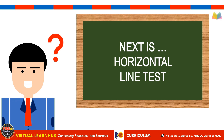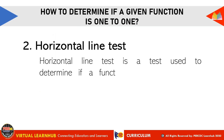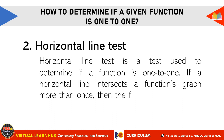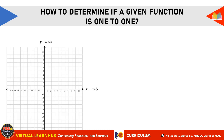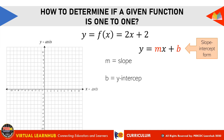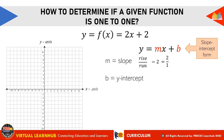The next method is the horizontal line test. It is used to determine if a function is one-to-one. If a horizontal line intersects a function's graph more than once, then the function is not one-to-one. For this example, y equals 2x plus 2, which is in the form y equals mx plus b, known as the slope-intercept form, where m is the slope and b is the y-intercept. In this function, m equals 2 and b equals 2.